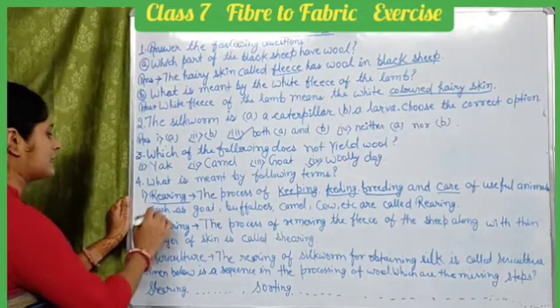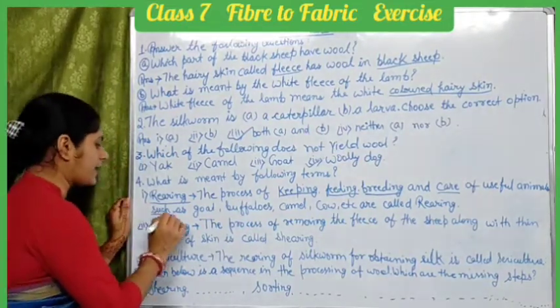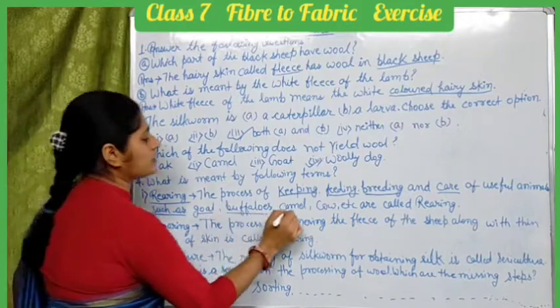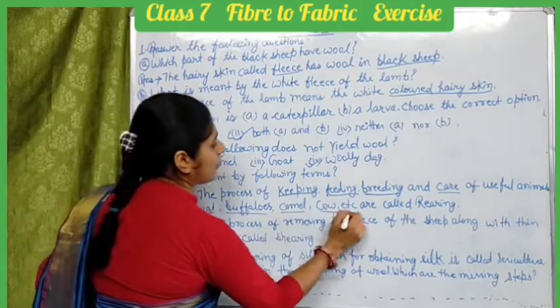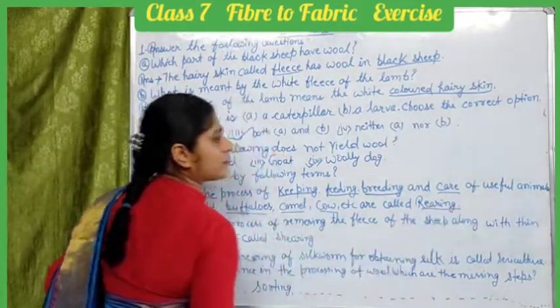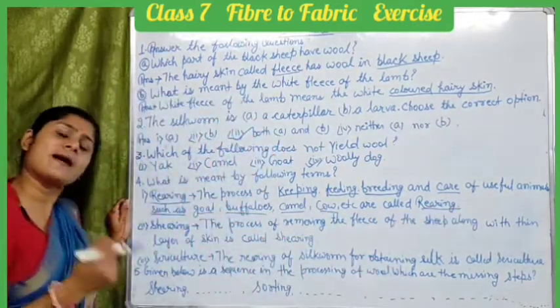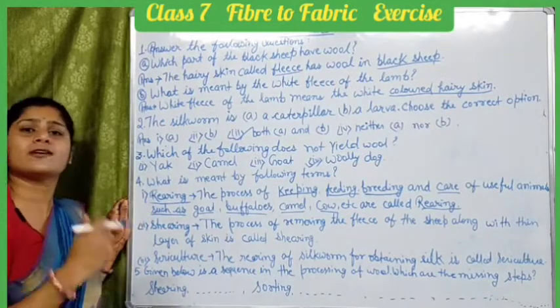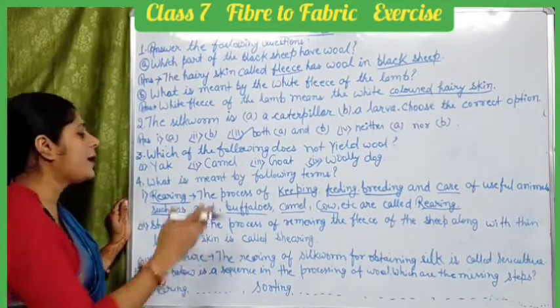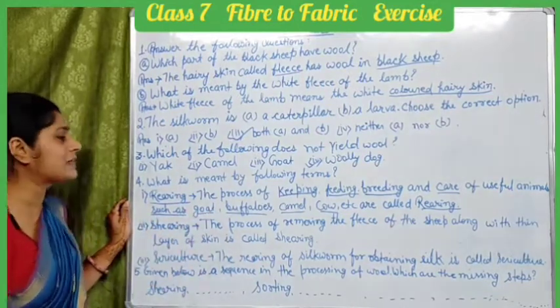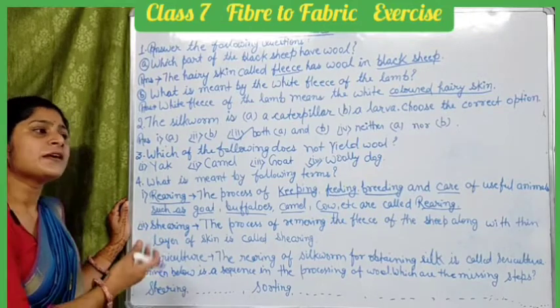Useful animals include goat, buffalo, camel, cow, etc. These are all referred to as rearing animals. Many animals are useful to us — from yak and goat we get wool, from buffalo and cow we get milk.